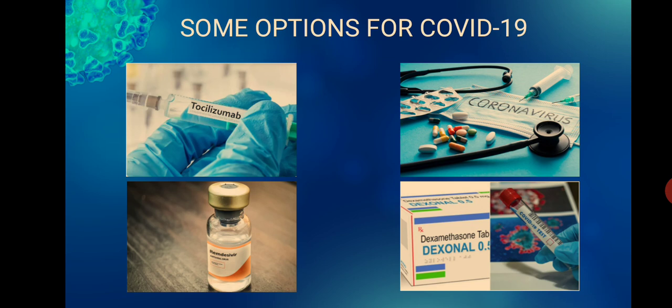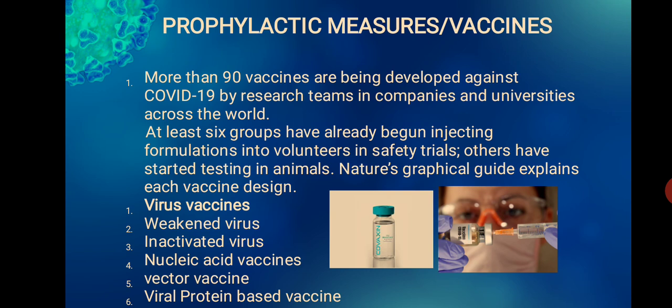Treatment options for COVID-19 patients include tocilizumab and remdesivir as injectable formulations, with other drugs under trial. Dexamethasone is available for emergency patients. For prophylactic measures, more than 90 vaccines are being developed against COVID-19 by research teams, companies, and universities worldwide. At least six groups have begun injecting formulations into volunteers in safety trials. Vaccine types include weakened virus vaccines, inactivated virus vaccines, nucleic acid vaccines, vector vaccines, and viral protein vaccines.